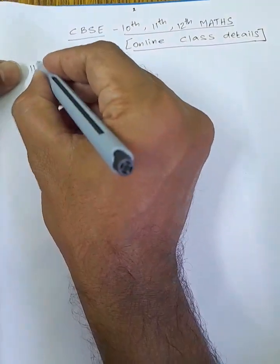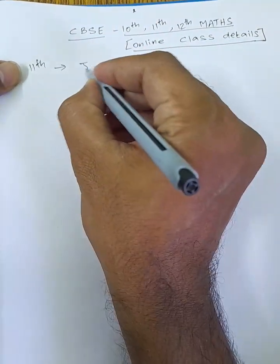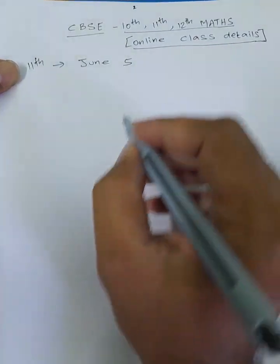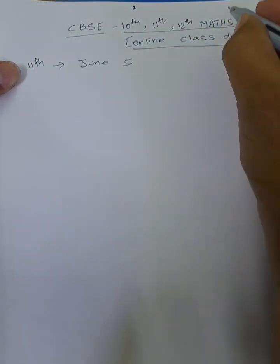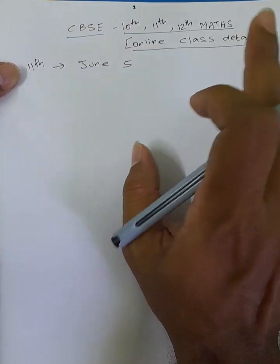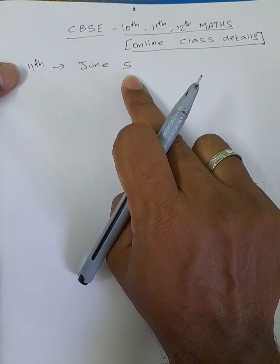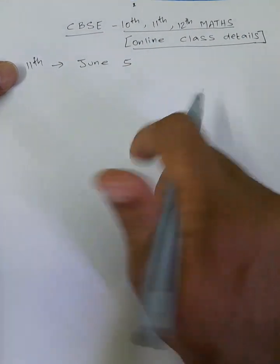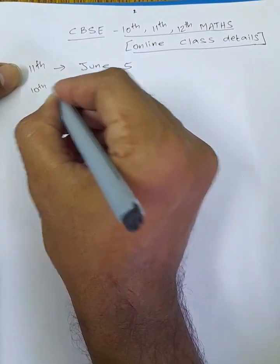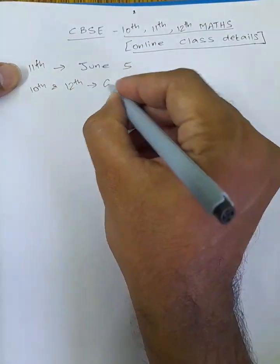On the day of June 5th, classes begin. For the academic year, I have run classes starting January 5th. So June 5th for the academic year is a school class starting July 5th. Classes are scheduled on July 10th and July 12th.